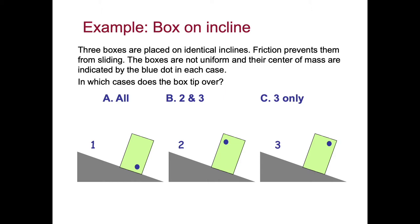We have a scenario where three boxes are placed on identical inclines. Friction prevents them from sliding. The boxes are non-uniform, so their center of masses are in different locations, indicated by the blue dots in each case. In which case does the box tip over? Either A, in all three cases; B, in 2 and 3; or C, in 3 only. I'll give you a second or two to think about that.